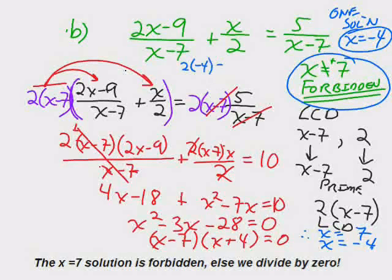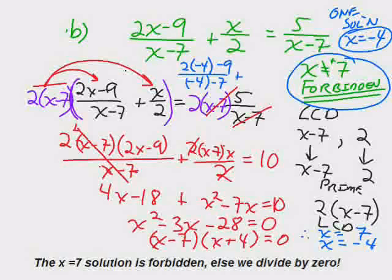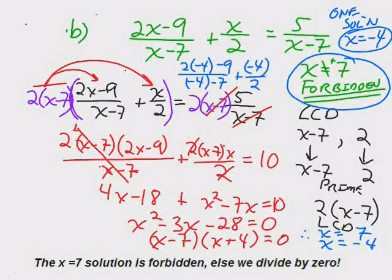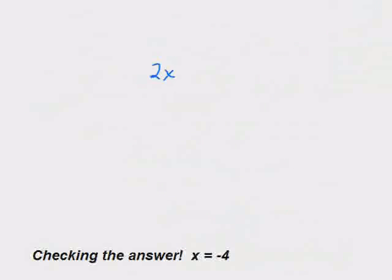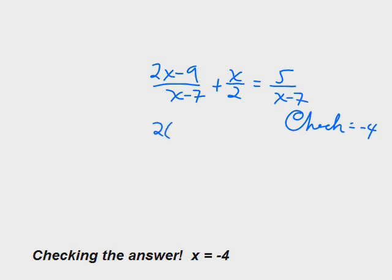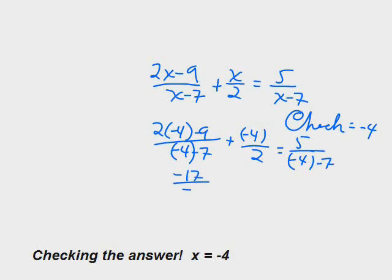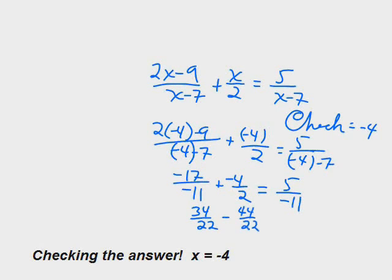2 times negative 4 minus 9 all divided by negative 11, plus negative 4 over 2. What does that equal? You'll find out it does work out to be the same. The left side is the same as the right side. We ran out of room there, so I did it here properly. We plugged in the minus 4 wherever we see an x. Lo and behold, the left side becomes that: negative 17 elevenths plus negative 4 halves. You need a common denominator. You need to know how to do fractions. If you can't do fractions, just check it on a calculator and make sure the left side comes out to be the same as the right side.